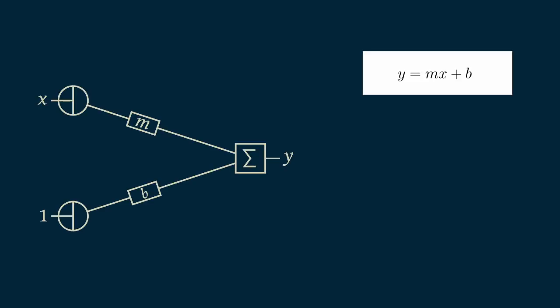We can represent this in a picture. Our input value x is multiplied by m. Our constant b is multiplied by 1, and then they get added together to get y. This is a graphical representation of y equals mx plus b.